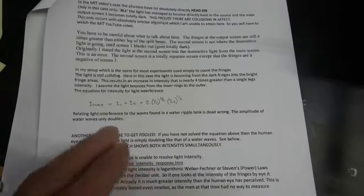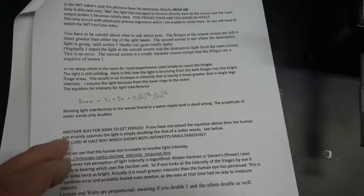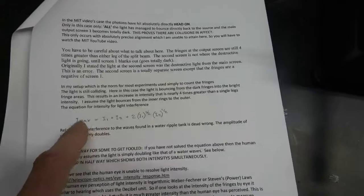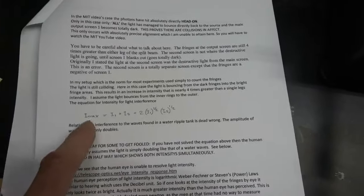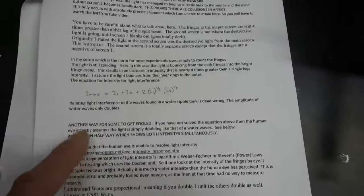So relating light interference to the waves found in a water ripple tank is dead wrong. If you solve this equation, if you put one in for the intensity, you're going to get four out, but it never quite gets to four.